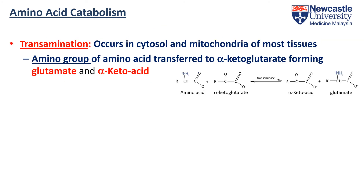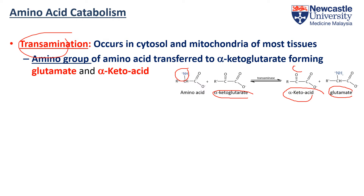To remove the amino group from the amino acid, we'll transfer it onto an alpha-ketoglutarate molecule. By doing that, we end up with an alpha-keto acid, which is the carbon skeleton, and an amino acid which is glutamate or glutamic acid. This process is known as transamination because it involves the transfer of the amino group between different molecules, and is catalyzed by the enzyme aminotransferase.